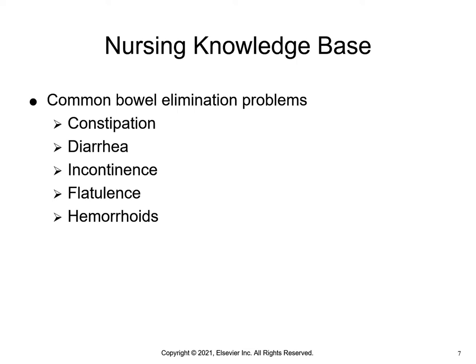Fecal impaction can result when a patient has unrelieved constipation and is unable to expel the hardened feces in the rectum. Diarrhea is the increase in the number of stools and the passage of liquid unformed feces, associated with disorders that affect digestion, absorption, and secretion in the GI tract. Dehydration signs in adults include thirst, less frequent urination, dark colored urine, dry skin, fatigue, dizziness, and lightheadedness.